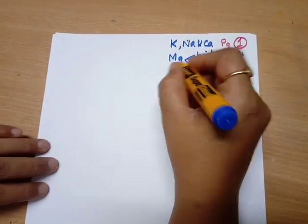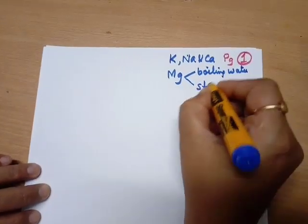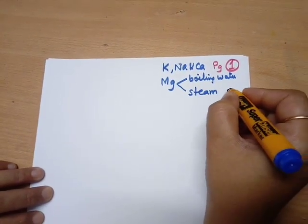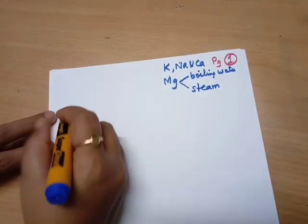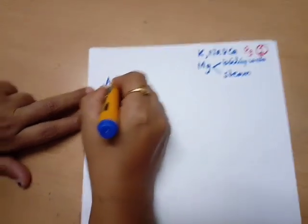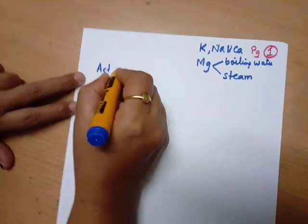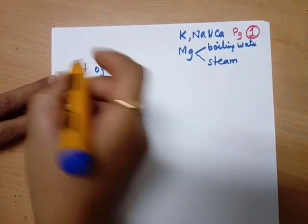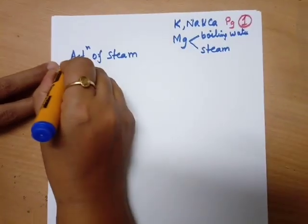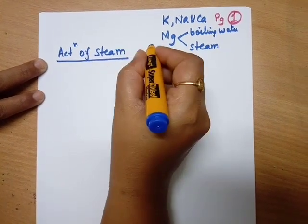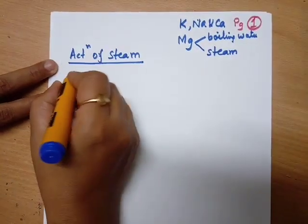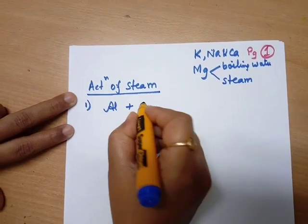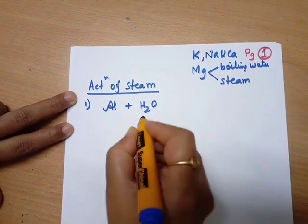Magnesium forms magnesium hydroxide and hydrogen with boiling water, whereas magnesium also reacts with steam forming magnesium oxide and hydrogen. Now let us see the action of steam on other metals like aluminium.